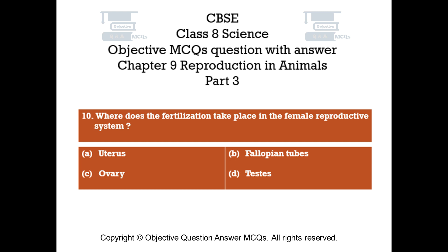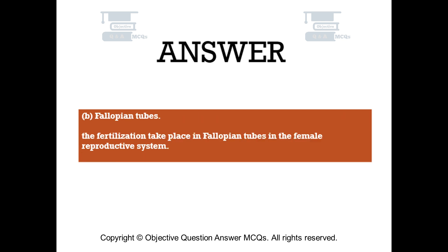Question number 10. Where does fertilization take place in the female reproductive system? Option A: Uterus. Option B: Fallopian tubes. Option C: Ovary. Option D: Testes. The right answer is option B — Fallopian tubes. Fertilization takes place in the fallopian tubes in the female reproductive system.